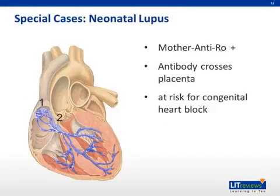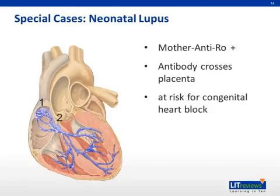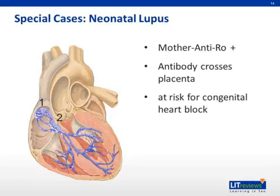While patients with lupus can have a number of complications during pregnancy, one that is of particular concern to the fetus is the so-called neonatal lupus. Babies of mothers with anti-Ro antibodies are at risk of developing congenital heart block. The mechanism is that the autoantibodies can cross the placenta and cause damage to the developing fetal cardiac conduction system. Neonatal lupus is associated with anti-Ro (SSA) or anti-La (SSB) antibody positivity.